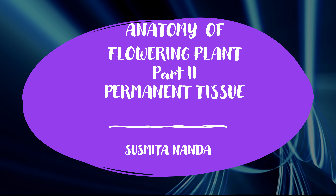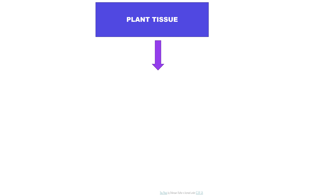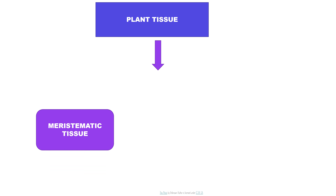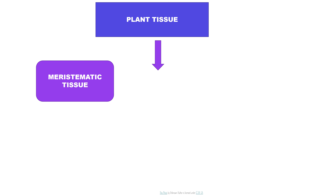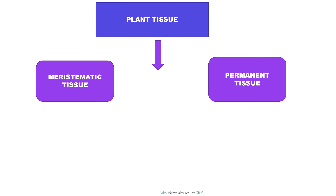In this video, we are going to explain about permanent tissues. Starting our discussion with plant tissues: tissues are the group of cells common in origin, similar in structure, and performing similar kind of functions. Depending on the dividing capacity of the cell, plant tissues can be divided into two types: meristematic tissues and permanent tissues.